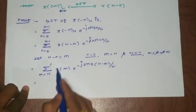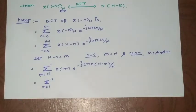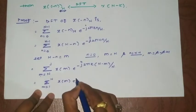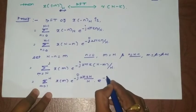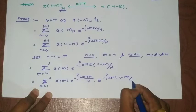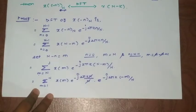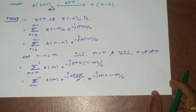We can rewrite the limits from 1 to N, since reversing summation order doesn't change the result. Expanding the exponent: e^(-j2πk(N-m)/N) = e^(-j2πkN/N)·e^(j2πkm/N) = e^(-j2πk)·e^(j2πkm/N). This gives summation from 1 to N of x(m)·e^(-j2πk)·e^(j2πkm/N), and we are left with the important term e^(-j2πk).